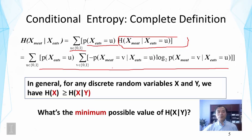In general, for any discrete random variables x and y, the conditional entropy is no larger than the entropy of the variable x. This is the upper bound for the conditional entropy. That means by knowing more information about the segment, we won't be able to increase the uncertainty — we can only reduce it. Intuitively, as we know more information, it should always help us make the prediction and cannot hurt it in any case.